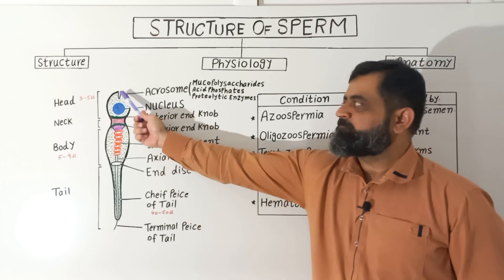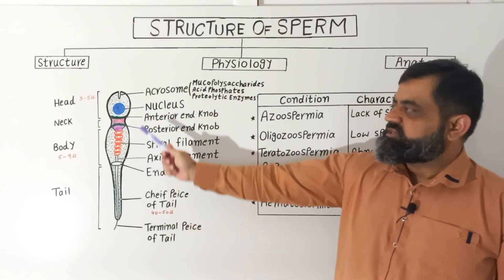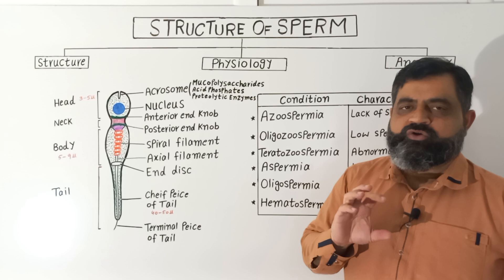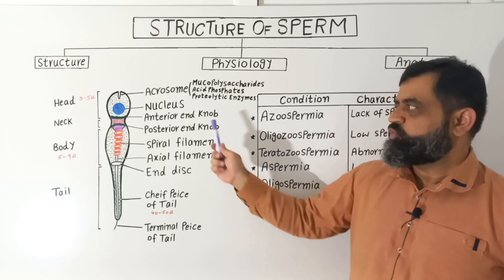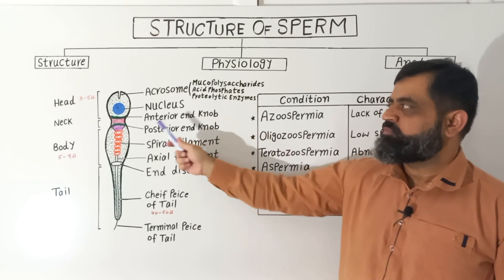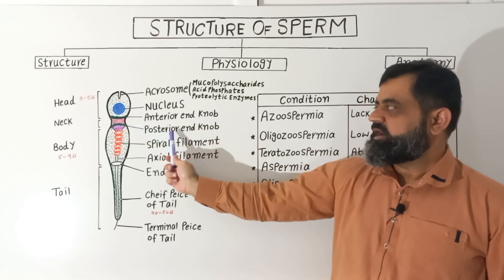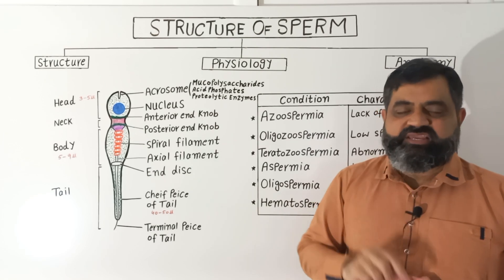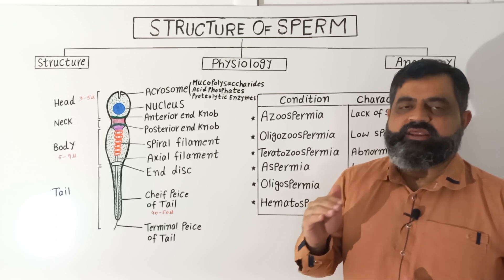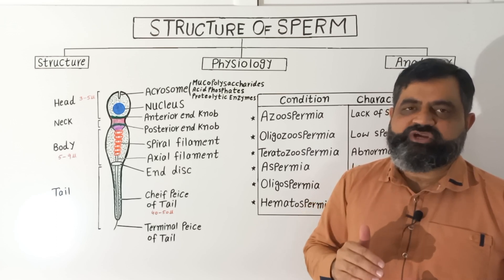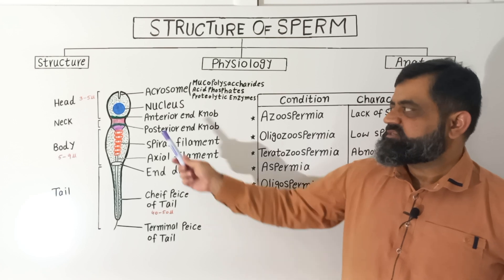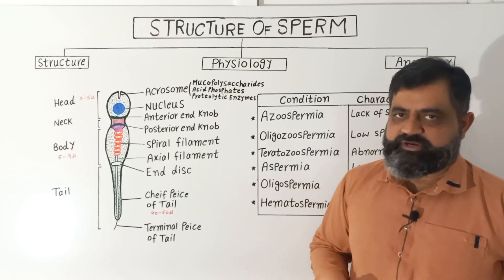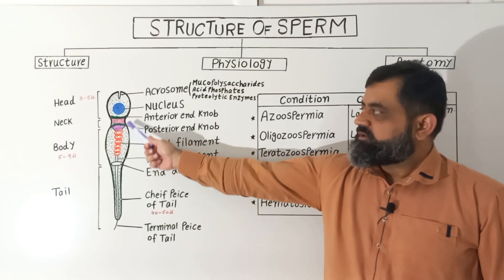Just below the head there is the neck region of the sperm. The neck region comprises two discs known as the anterior end knob, shown in green, and the posterior end knob. These two knob-like disc structures are present between the head and the body, differentiating the head from the body. From these knobs there arises a filament-like structure known as the axial filament.